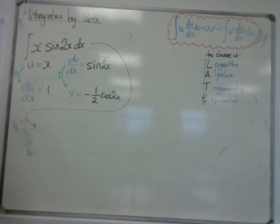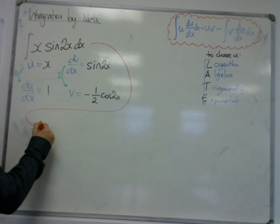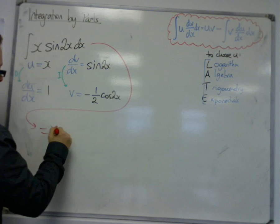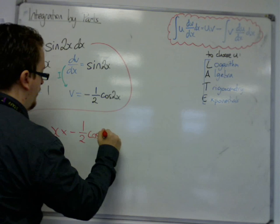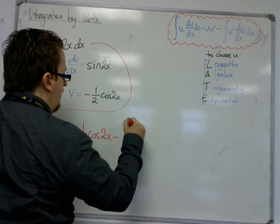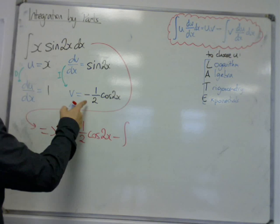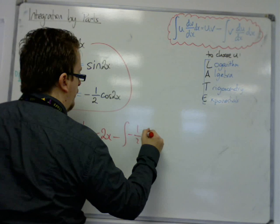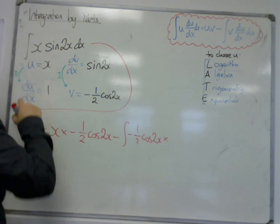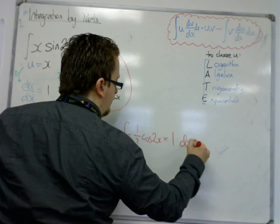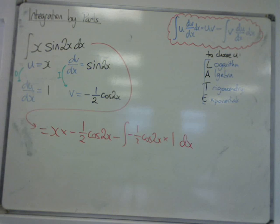So we just plug now into the formula. We've got u times v, so x times minus 1/2 cos 2x. Take away the integral of v, that's minus 1/2 cos 2x, times by du/dx, which was 1.